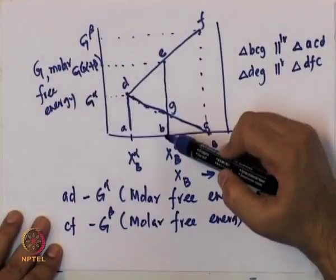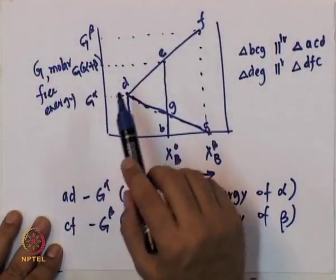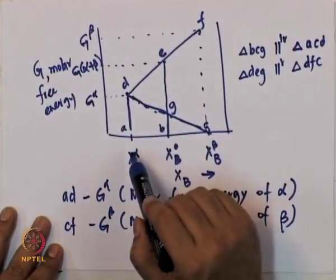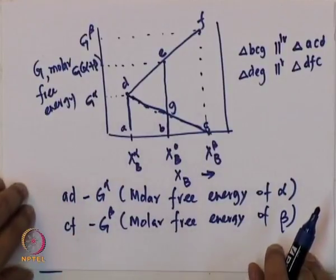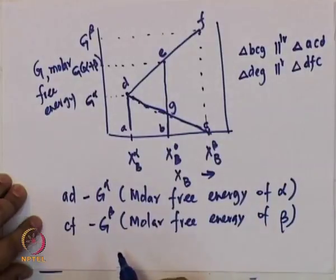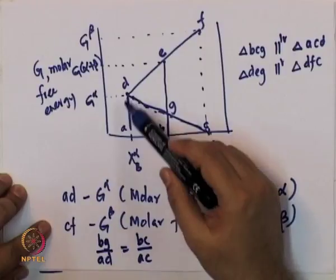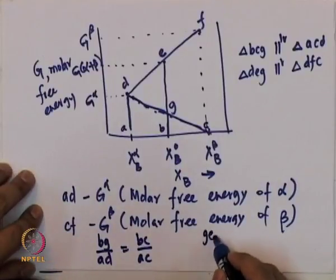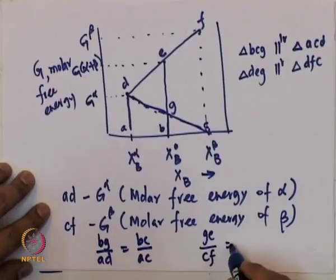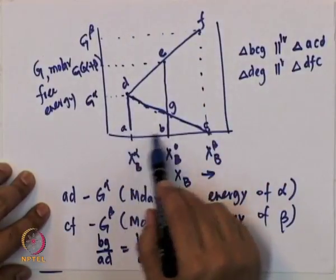What we want to prove is that for a point E, that gives the molar free energy of the alpha plus beta mechanical mixture. From the similar triangles it is easy to show that BG/AD equals BC/AC, and GE/CF equals AB/AC.